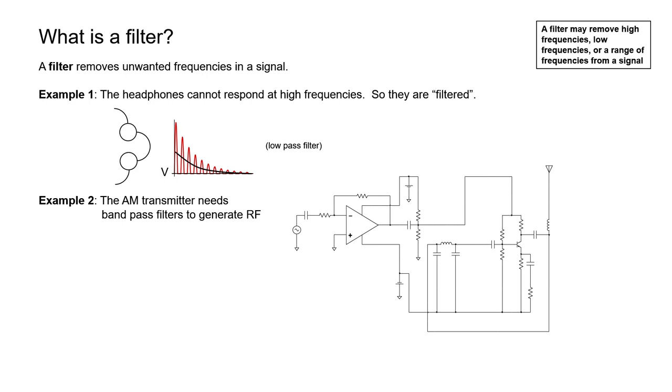I know that you've probably not seen a circuit diagram this complicated before, but we can usually identify where the filter is. You can identify filters by looking for capacitors and inductors grouped together in a circuit. These two capacitors and inductor right here are an example of a passive filter.